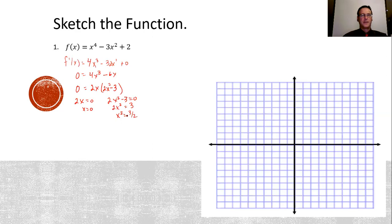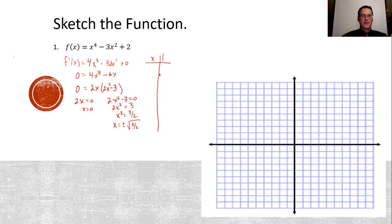I'm going to take the derivative in order to find extrema. This is our derivative — I put the three times two there just because I almost forgot it. We're going to set this equal to zero to find out where some possible maximums and minimums may be, and then we can also talk about increasing and decreasing.